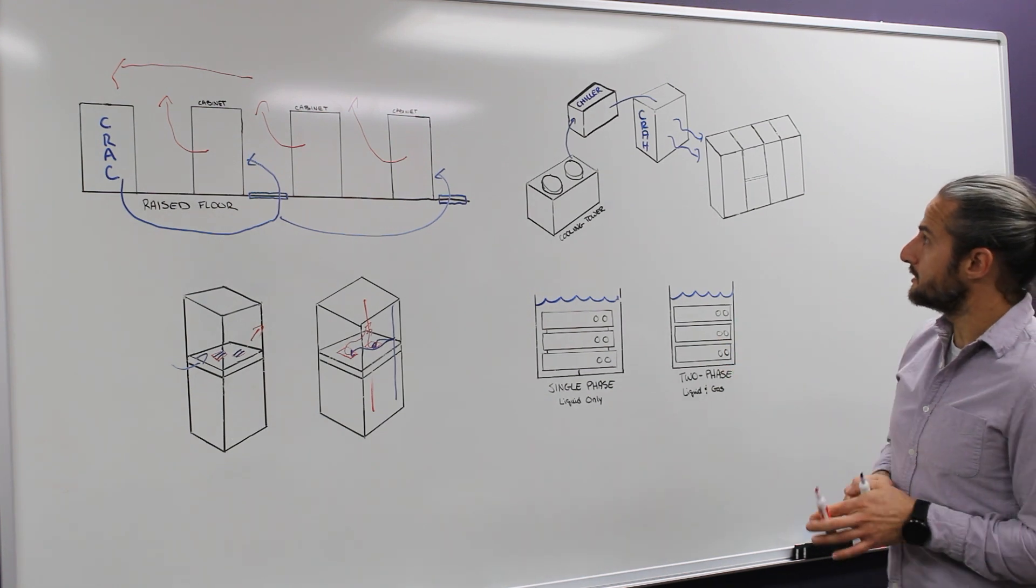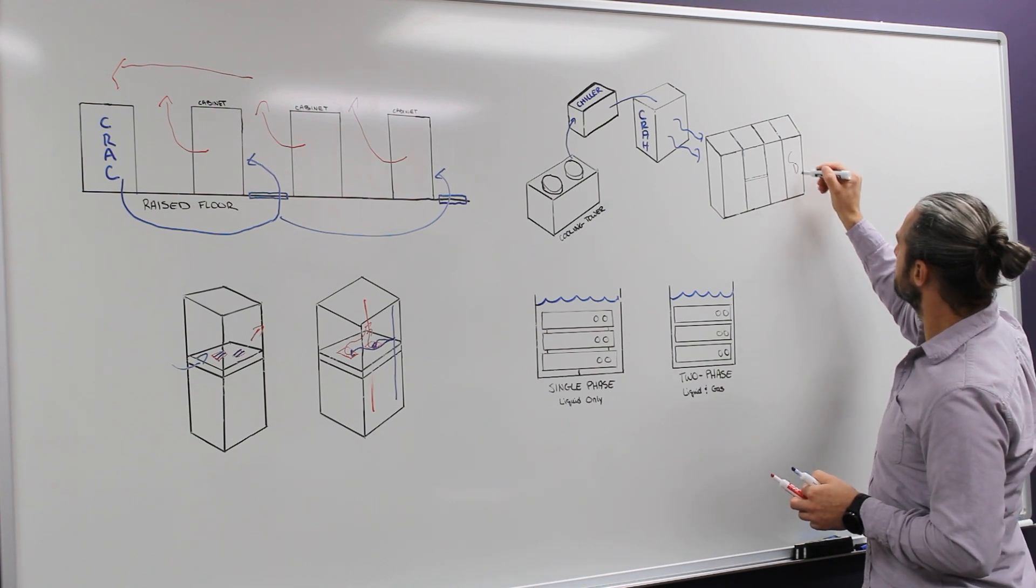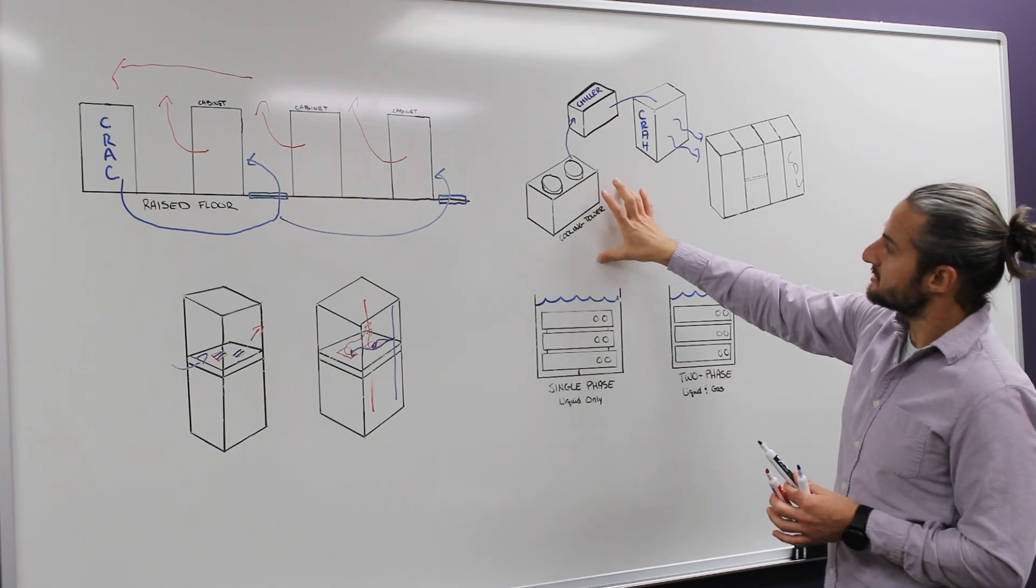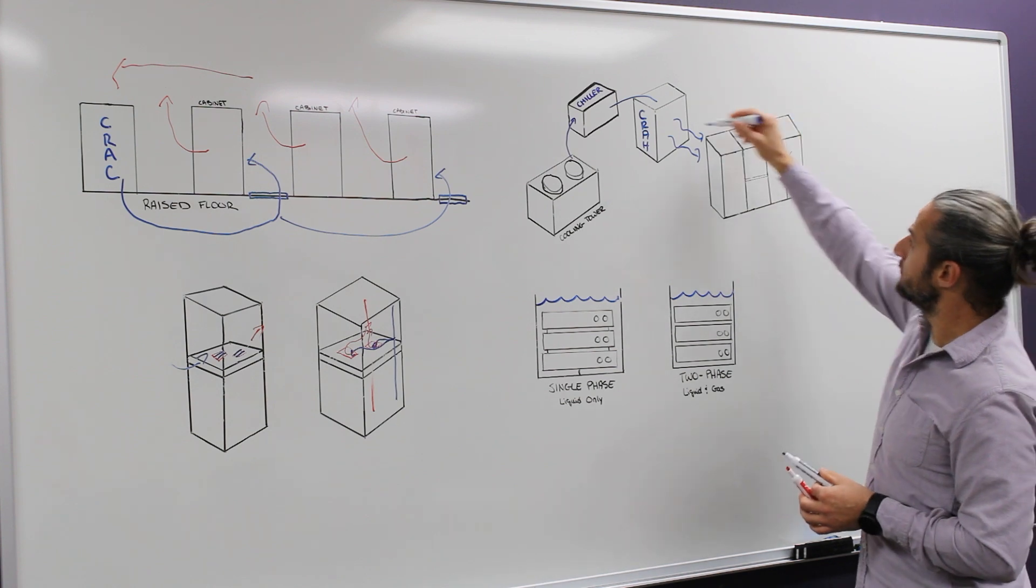If it's a liquid cooling system, instead of a CRA unit, you may have a CDU located at the end of one of your rows where the cooling tower is cooling the chiller, which is providing cold water, which is going into a CDU now.